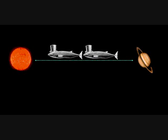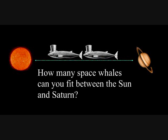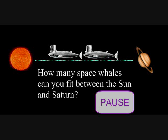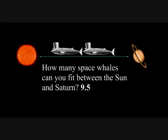I now would like you to visualize the Sun and Saturn, and imagine that a row of space whales has nestled itself between the two. How many space whales, given they were in a line, could you fit between the Sun and Saturn? Pause if you need to guess. Keeping in mind that we're talking about the average distance between the Sun and Saturn, the answer is about 9.5 space whales.